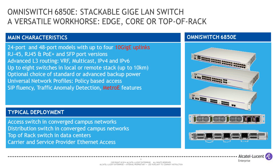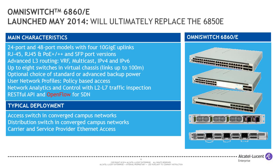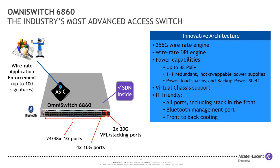I mention the 6850E for completeness, but what we're now positioning instead is the 6860, launched in May 2014. It has everything the 6850E does and a bit more — including support for OpenFlow, which we didn't have before. This is a new and interesting enough switch that I should spend more time on it. We call it the industry's most advanced access switch.